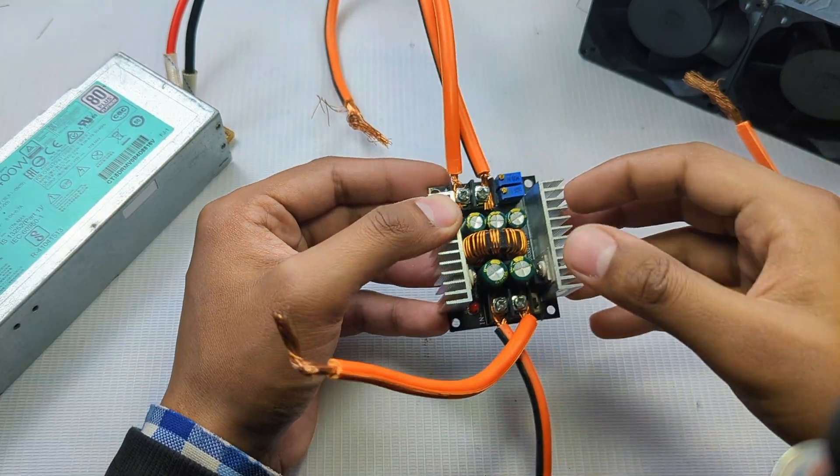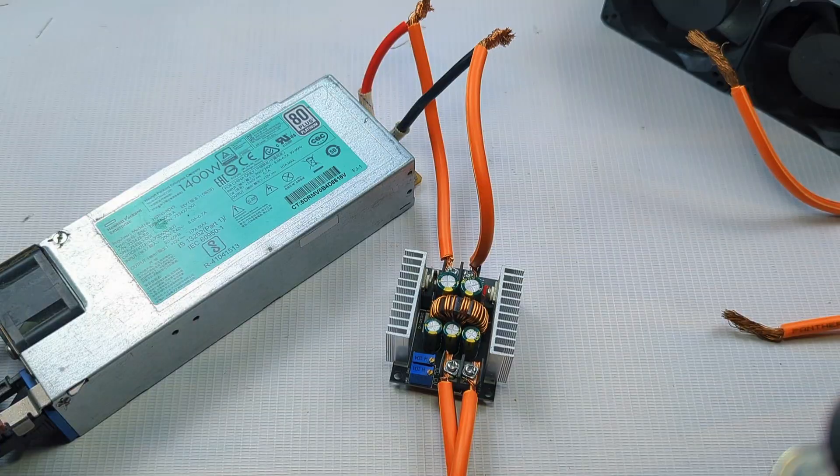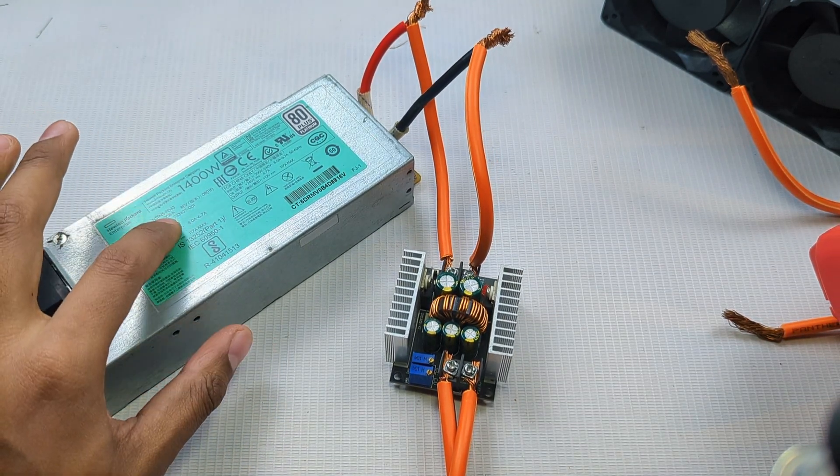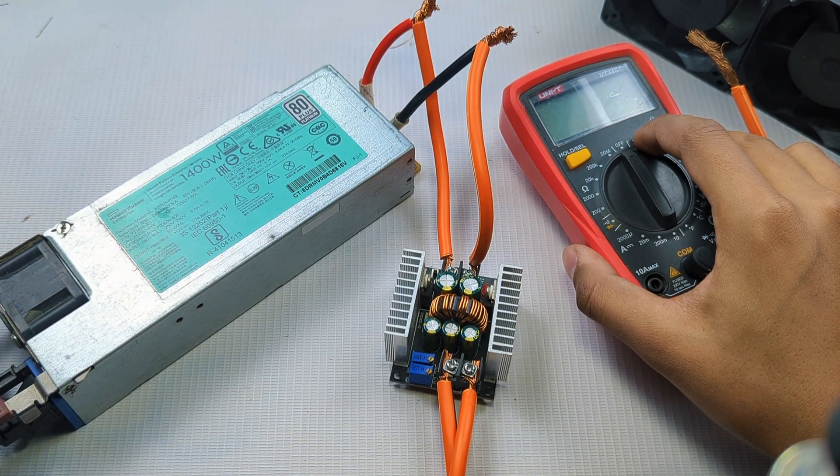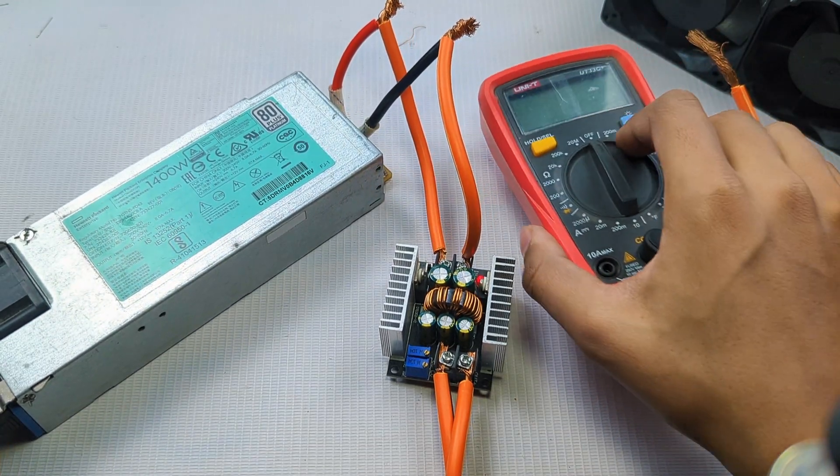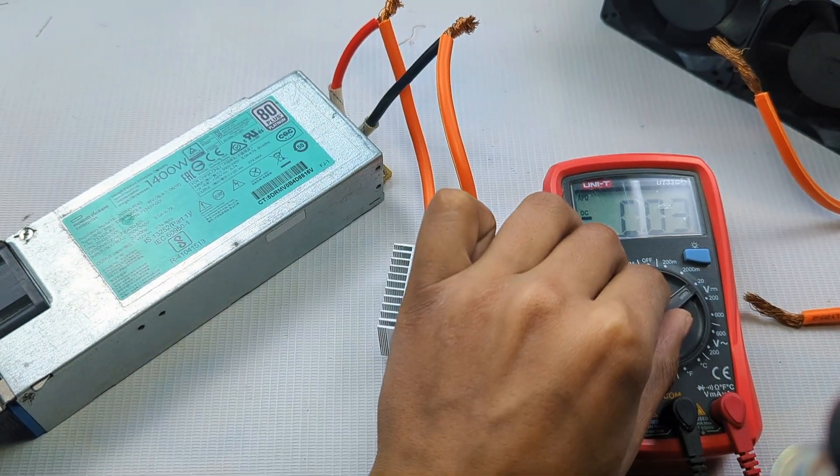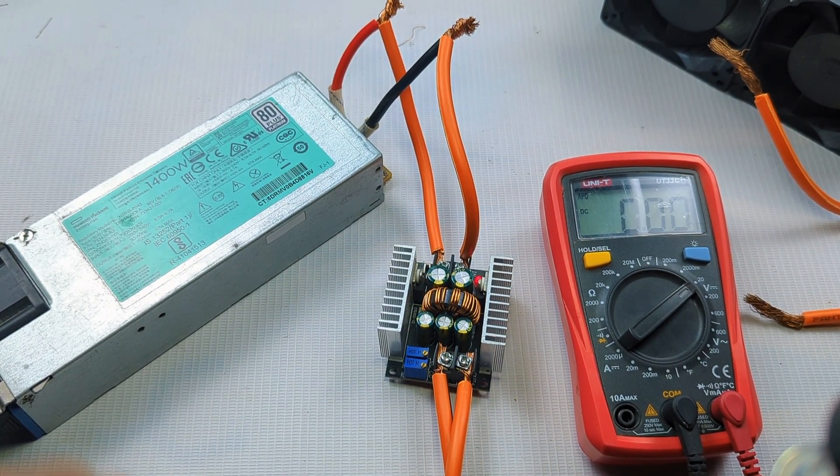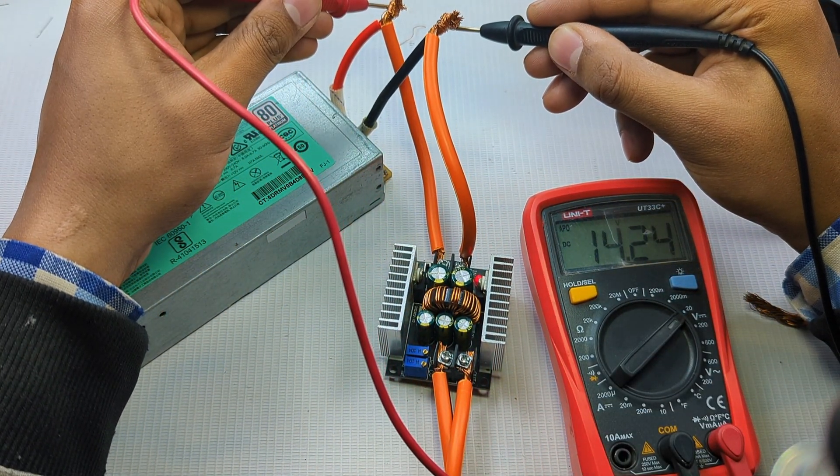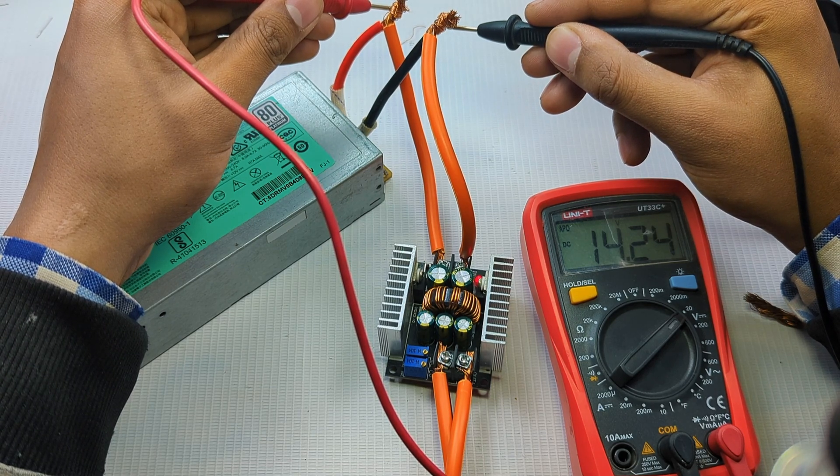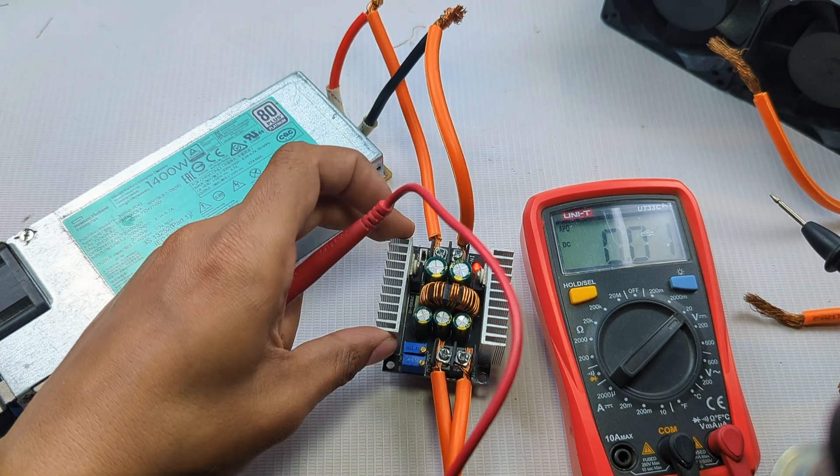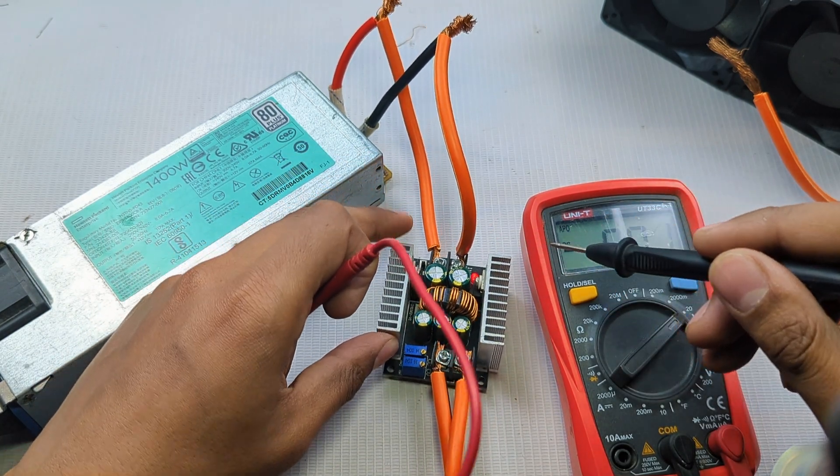Let's do all the wiring. One more thing, I have modded this power supply to 14 volts. It gives 14 volts at output. Let me show you. Power supply is now turned on. Take the multimeter. As you can see it's giving 14.24 volts at the output and this buck converter is also turned on.